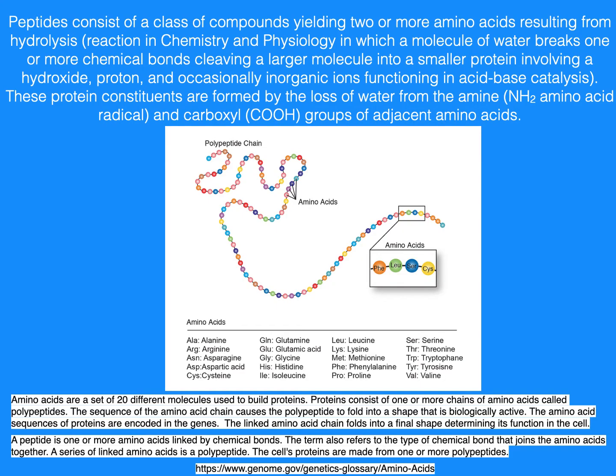Peptides consist of a class of compounds yielding two or more amino acids, resulting from hydrolysis. These protein constituents are formed by the loss of water from the amine and carboxyl groups of adjacent amino acids. Amino acids are a set of 20 different molecules used to build proteins.